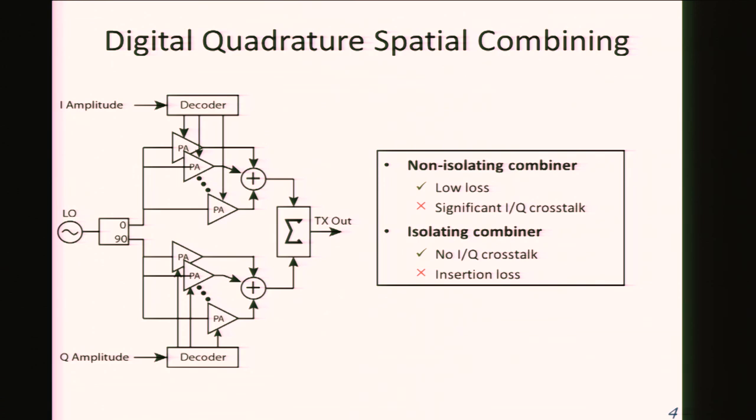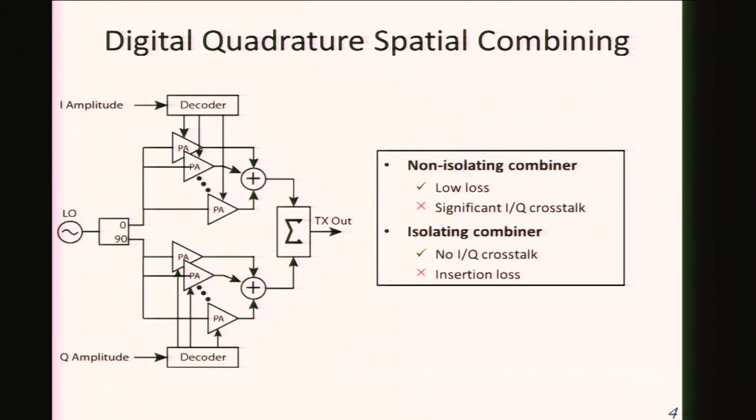Non-isolating combiners have very low insertion loss, which will not degrade the entire transmitter efficiency, but they create significant IQ crosstalk and therefore degrade the signal constellation. On the other hand, isolating combiners prevent IQ crosstalk and preserve the constellation map, but the problem is they are very lossy. Usually you get 3 dB insertion loss and a 50% hit on overall efficiency.